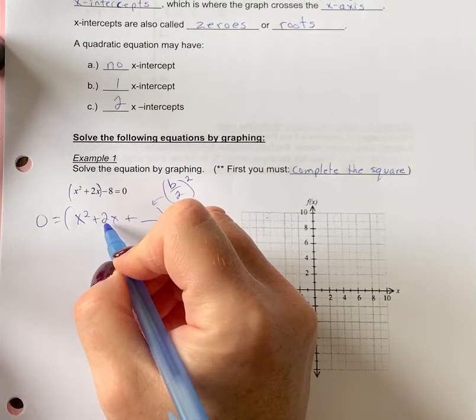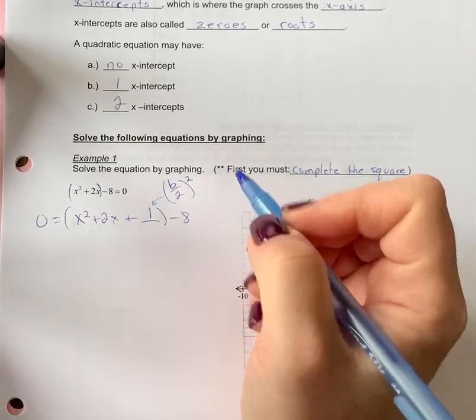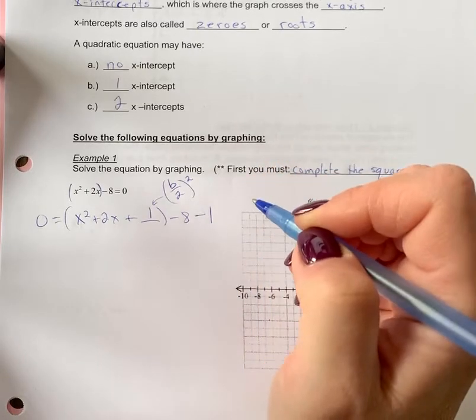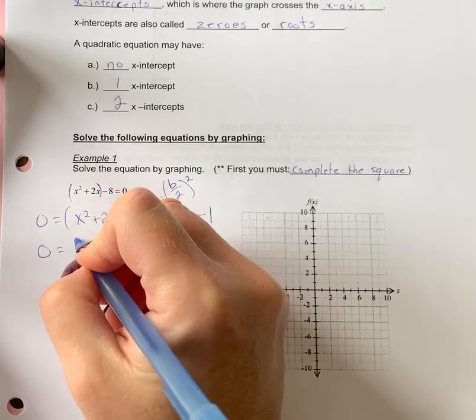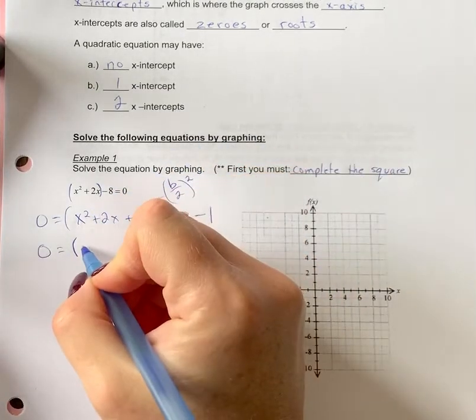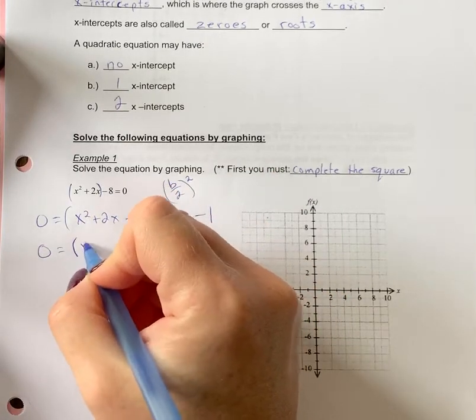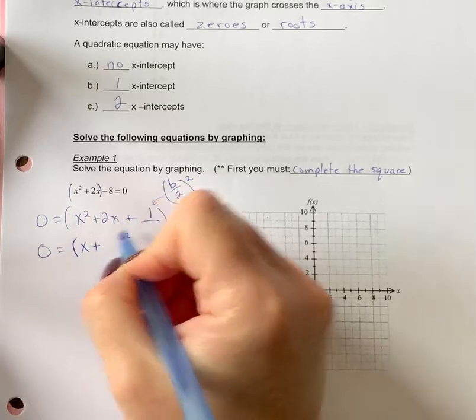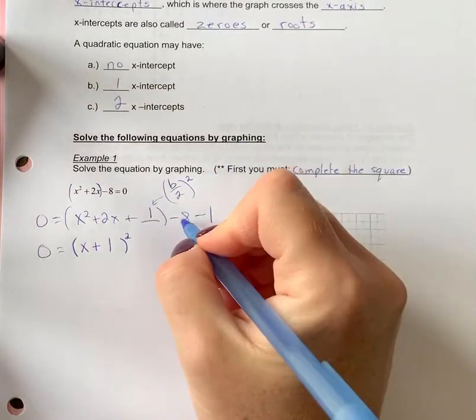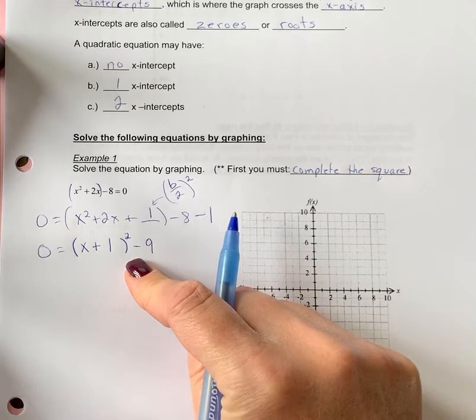This is your b value, so 2 divided by 2 is 1. 1 squared is 1. So we're going to add 1 there, which means we have to take 1 away, so subtract 1 there to balance it out. Then we're going to write this as the square of the binomial. When we have our x squares, that means we're dealing with x. All of the signs are positive, and we just need to square root that 1, and that becomes the value there. So minus 8 minus 1 would give us minus 9. So we have a vertex of negative 1, negative 9. Remember, it always looks like the opposite sign for the h value.